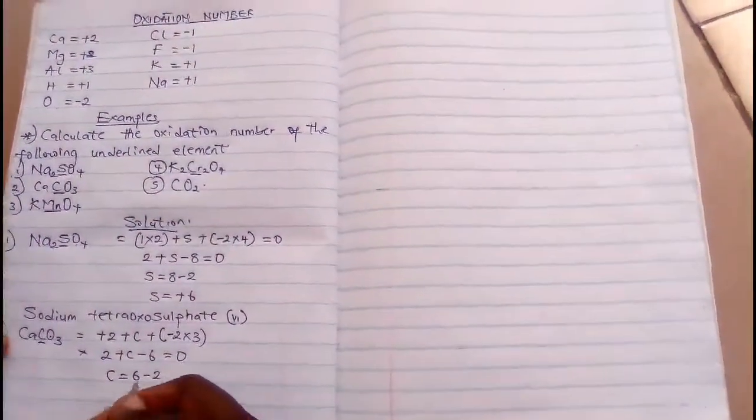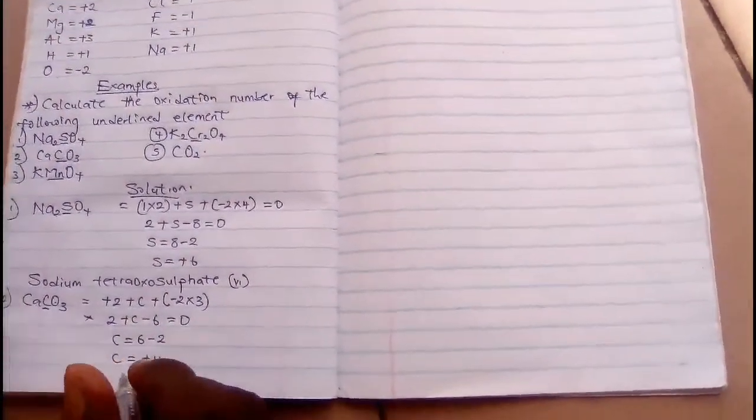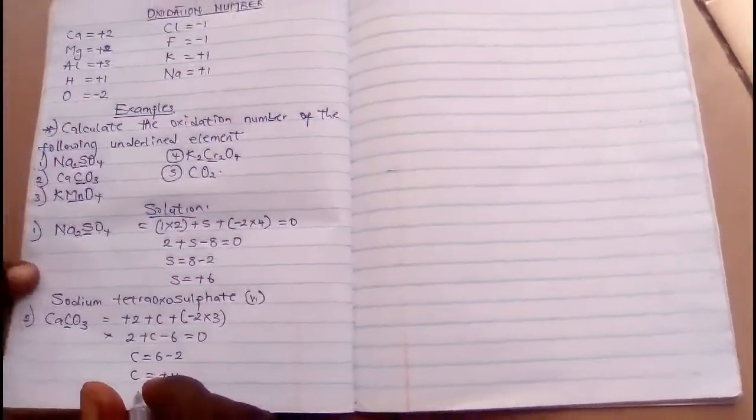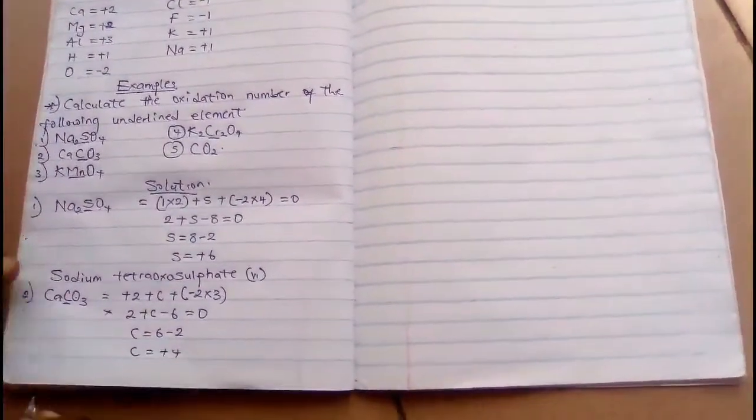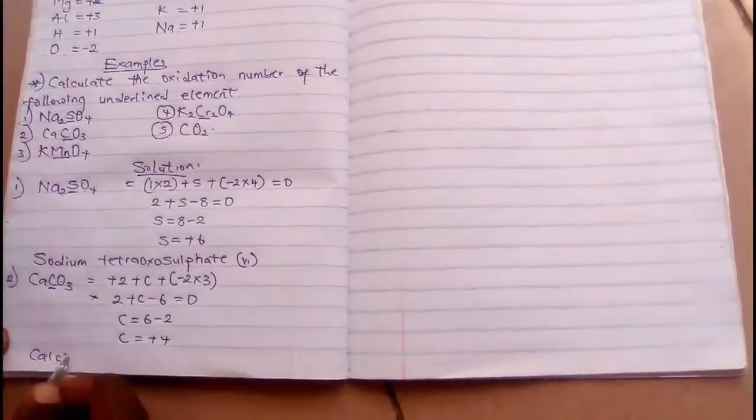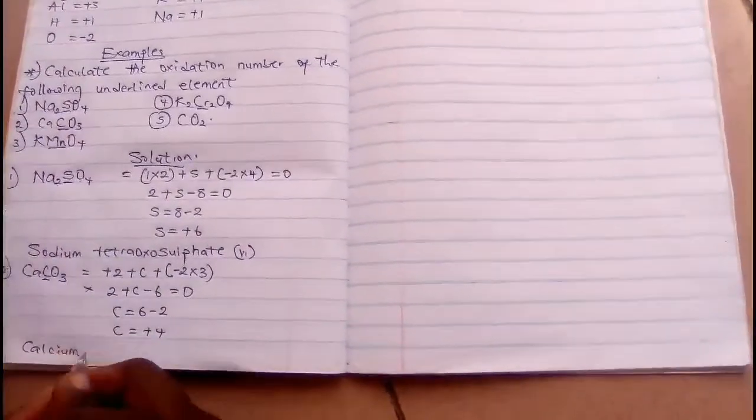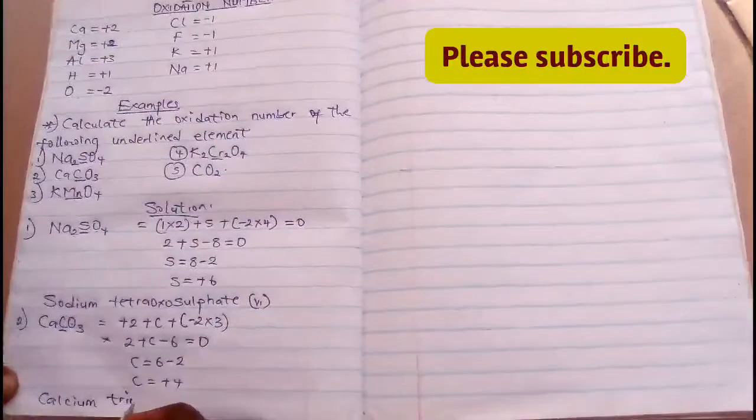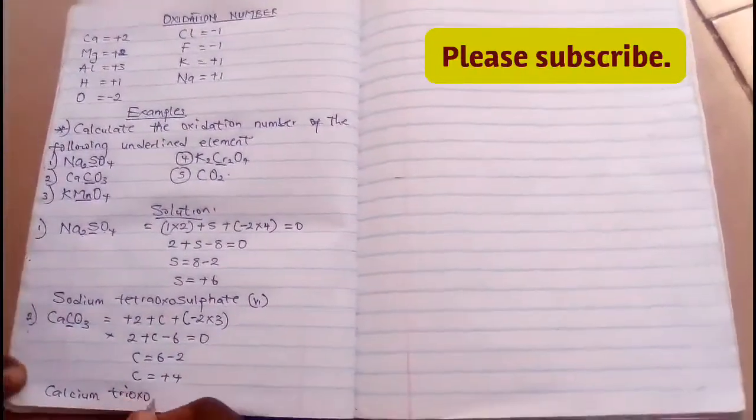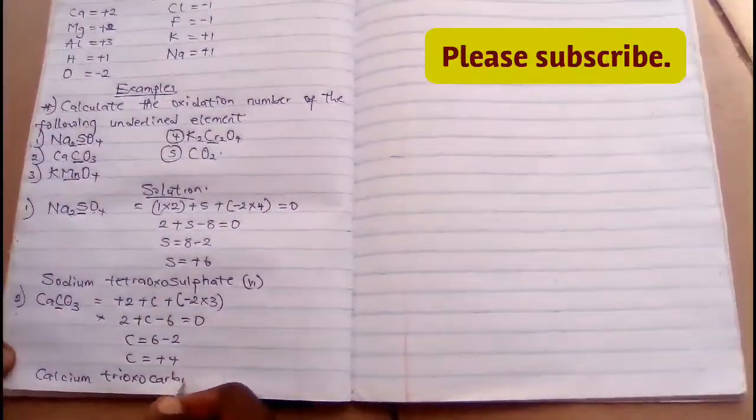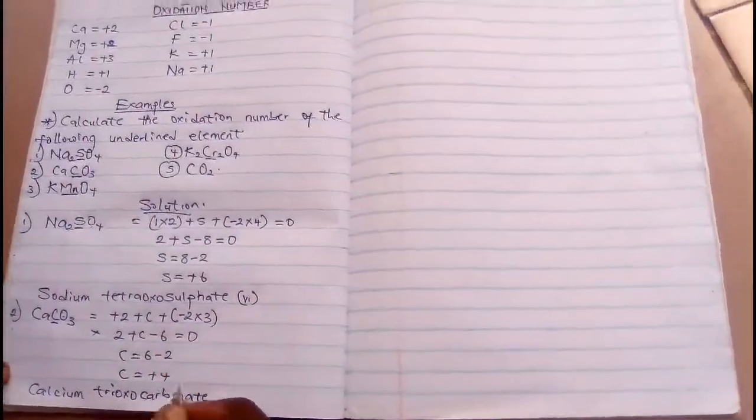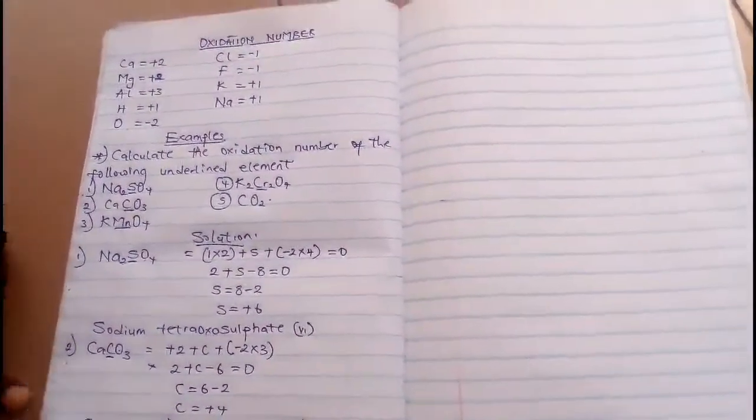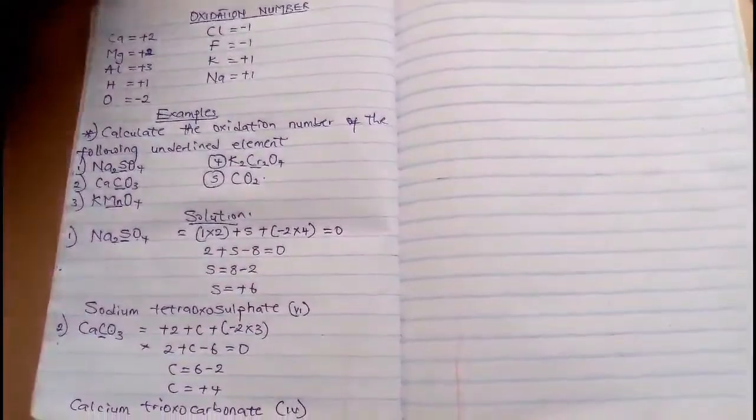So let's collect like terms, then C = 6 - 2, then automatically C = +4. This is our answer. Then the IUPAC nomenclature for this compound is calcium tri-oxo-carbonate. C is carbonate and the oxidation number is +4. This is how to get it.